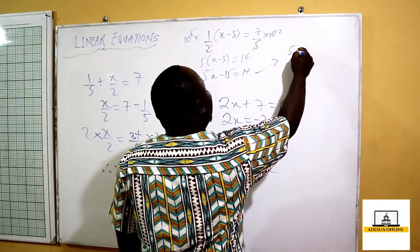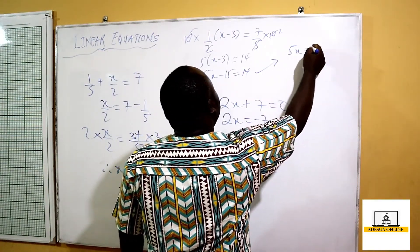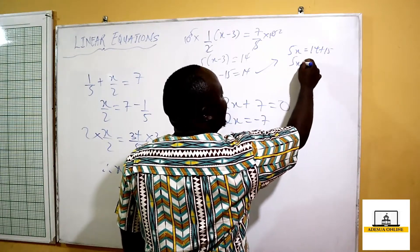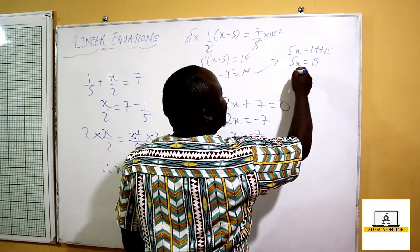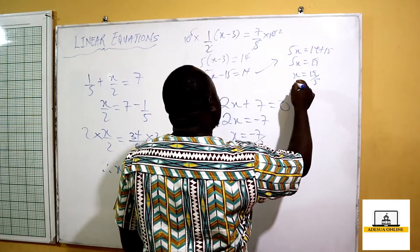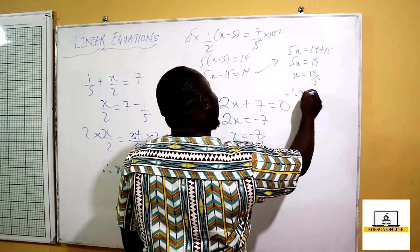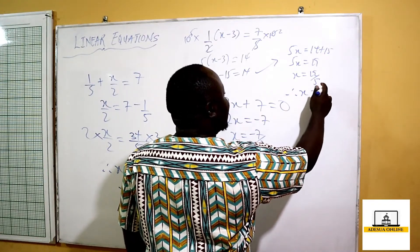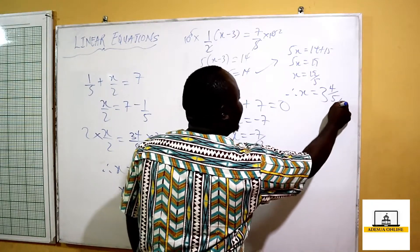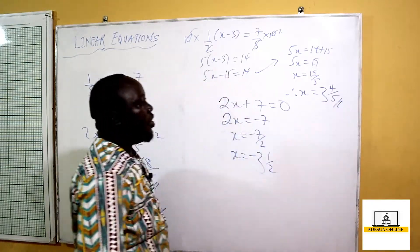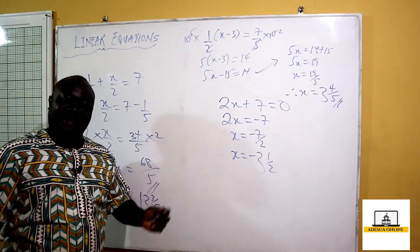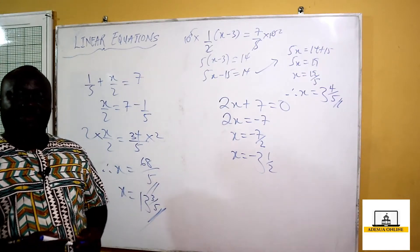Continuing: 5x equals 14 plus 15, so 5x equals 29 — wait, 5x equals 19, therefore x equals 19 over 5. Converting: 5 goes into 19 three times with remainder 4, giving us 3 and 4 over 5. We have different forms of linear equations. Let's solve another example and then move on.